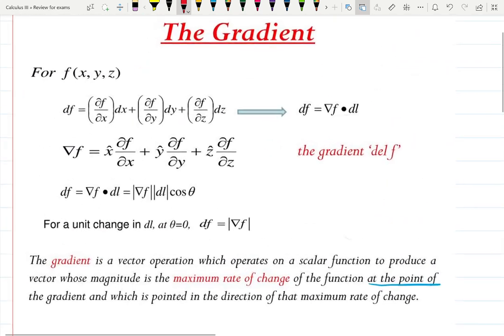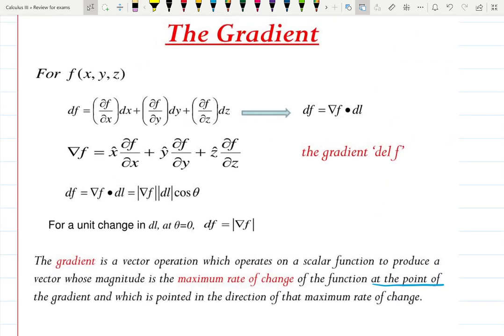Here is a reminder for you what gradient means. Gradient collects partial derivatives and it is a vector operation which operates on a scalar function to produce a vector. Those magnitudes, the maximum of the vector will give you the maximum rate of the function.